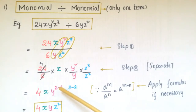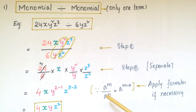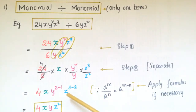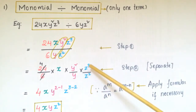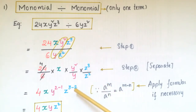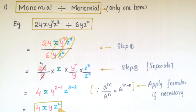Then 24/6 is 4, times x, times y²/y¹ which is y^(2−1), because a^m / a^n = a^(m−n), and z³/z² which is z^(3−2). So the answer is 4xyz.